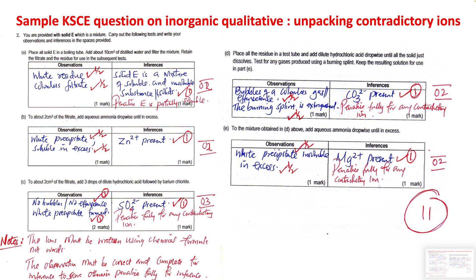For part D, place all the residue in a boiling tube and add dilute hydrochloric acid dropwise until the solid just dissolves. Test any gases produced using a burning splint. You get bubbles of gas — there is a mark for that — and the burning splint is extinguished. There is no mark for saying 'colorless gas' because you cannot see a colorless gas; what you can see is bubbles. When the burning splint is extinguished, we confirm carbonate is present.